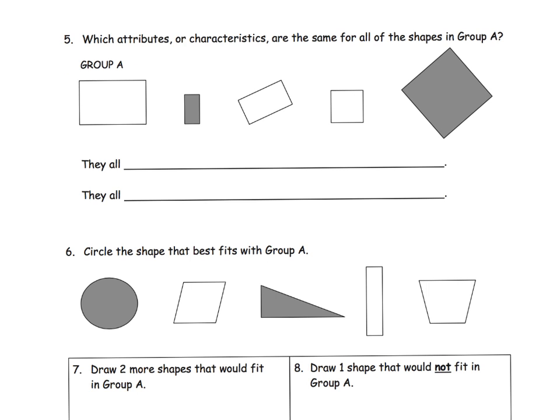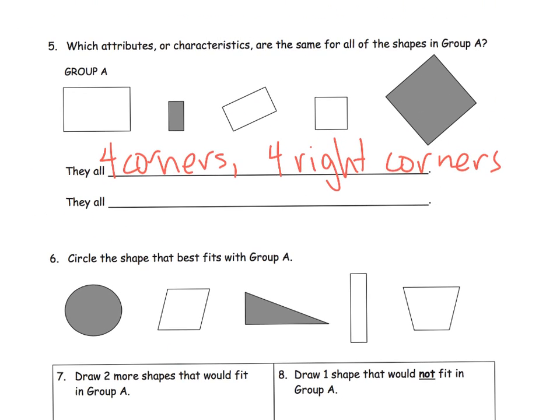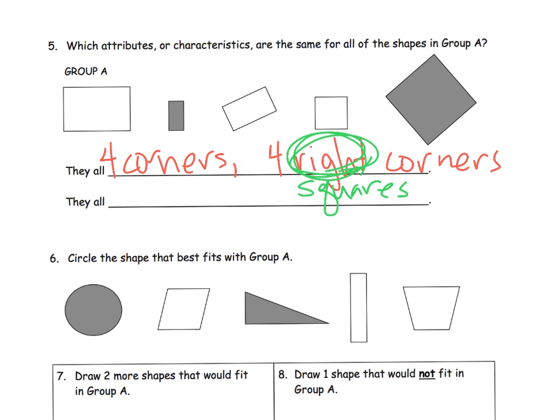This is kind of a fun one. And some students might see something a little different than others. Well, one, I see that they all have four corners. They all have four corners. But someone else might say they have four, what do we call it, right angles? You know, I just call it right corners. But really, I think the last slide, we called them, we didn't call them right corners. You could have called them four square corners. Your choice.